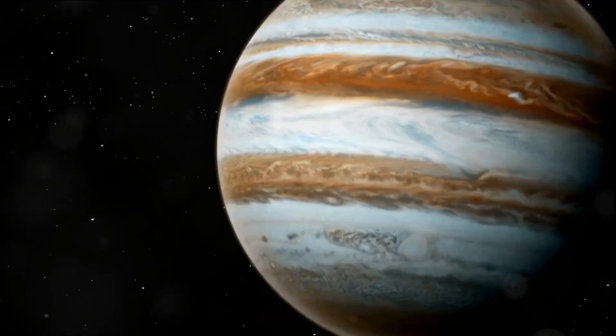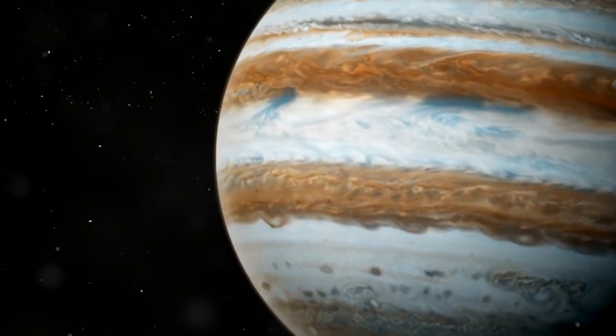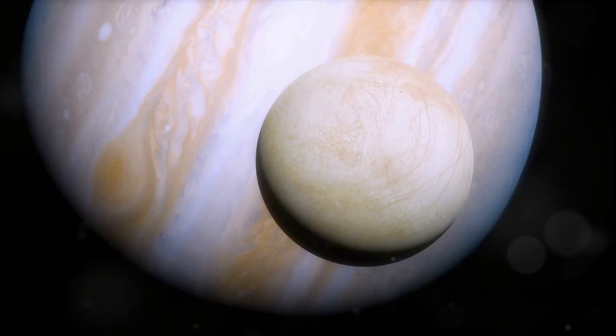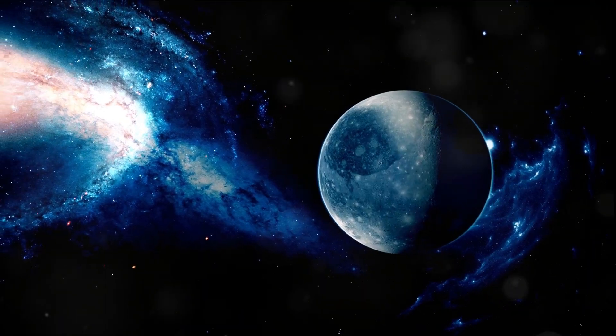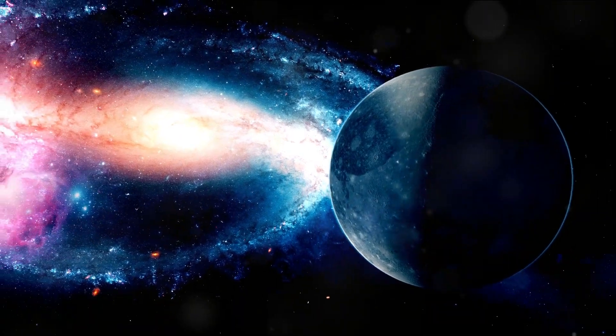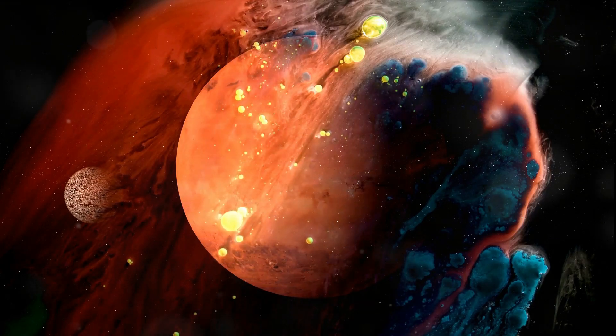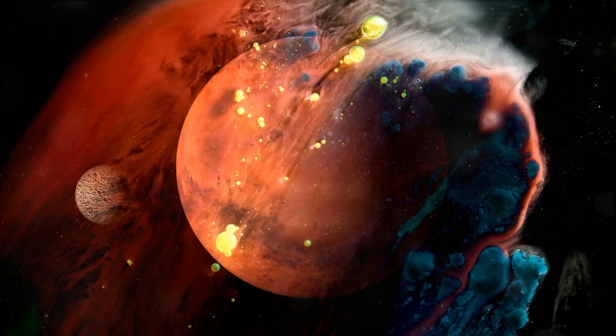These detection methods revealed a diverse range of exoplanets. Some of these early discoveries were gas giants, much like our own Jupiter, but orbiting their stars in a matter of days rather than years. These were the hot Jupiters, a term coined for their close proximity to their stars and consequent high temperatures. Other initial discoveries included Neptune-like planets, considerably smaller than the hot Jupiters, but still larger than our Earth. These planets, often located within the habitable zones of their stars, hinted at the possibility of liquid water and perhaps life.